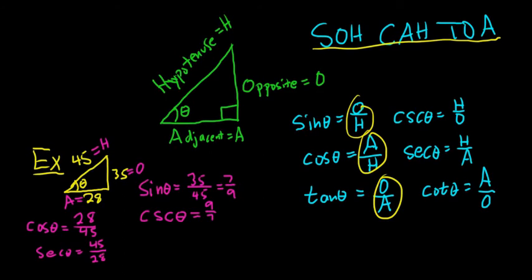And finally, we can do tangent. So SOH-CAH-TOA. So tangent is O over A. So O is 35. And A is 28. And the reciprocal of tangent is simply cotangent. So that would be, you just flip it. So you get 28 over 35.